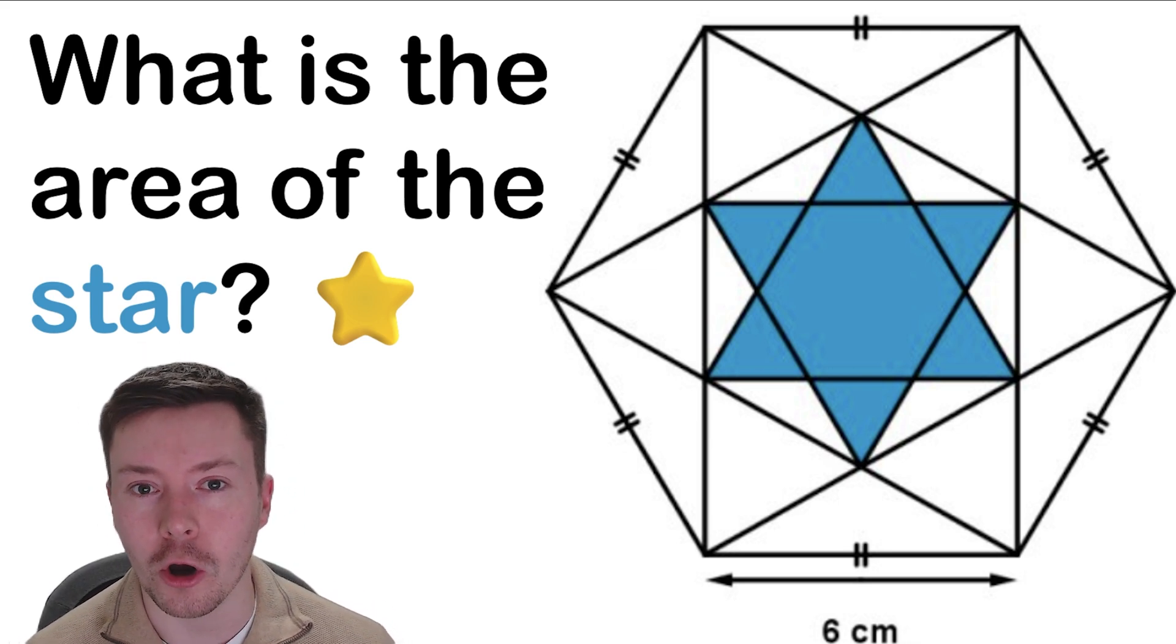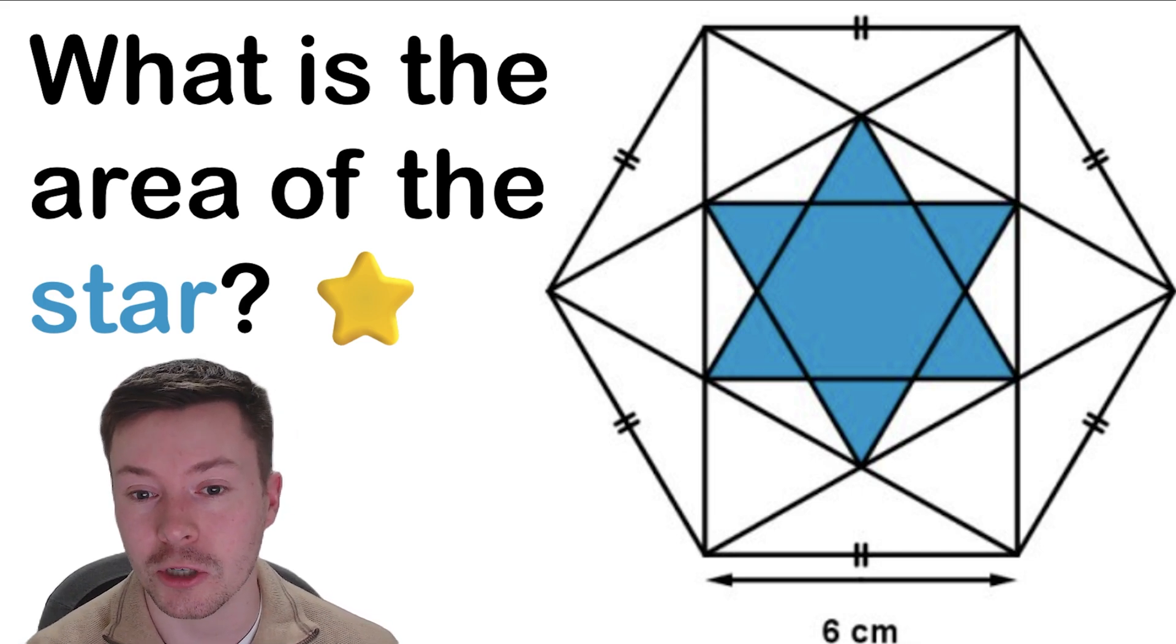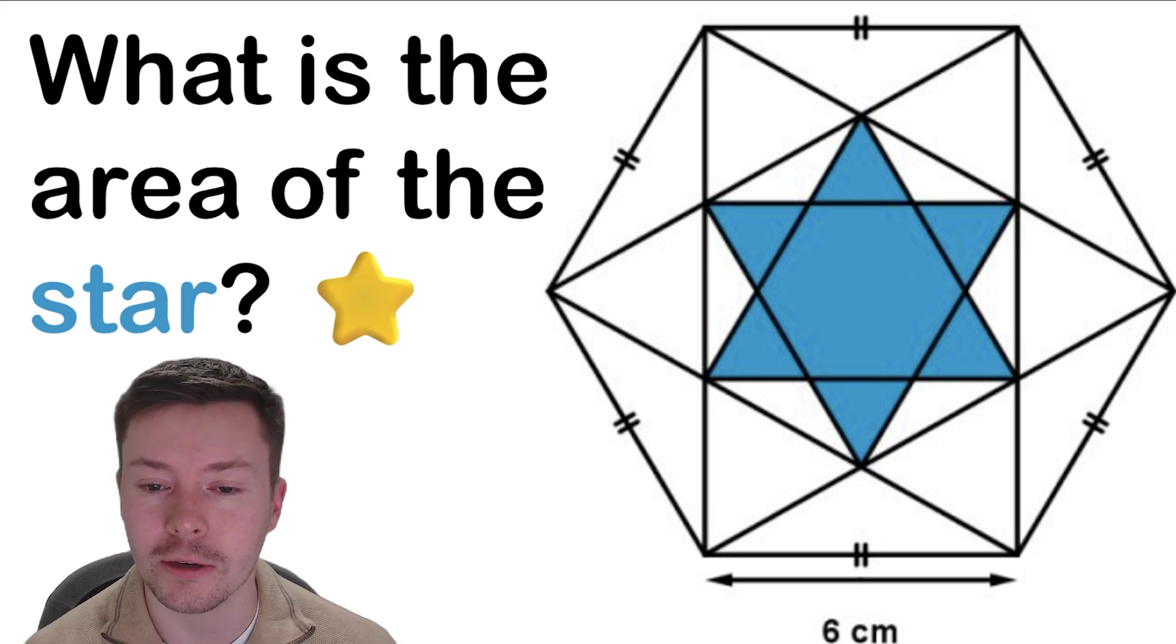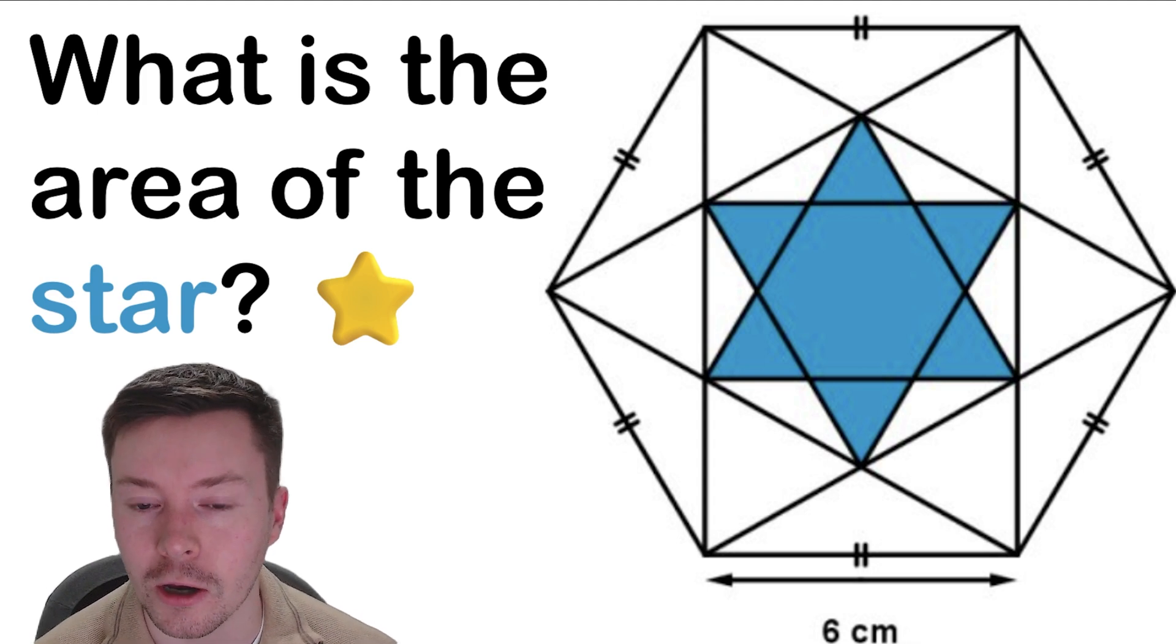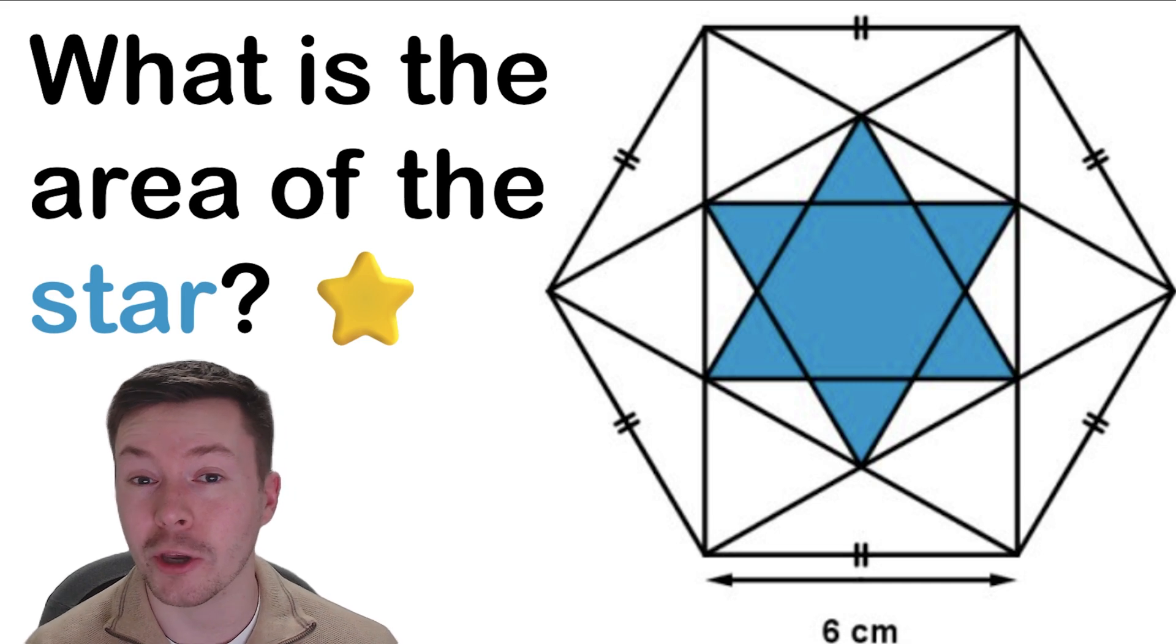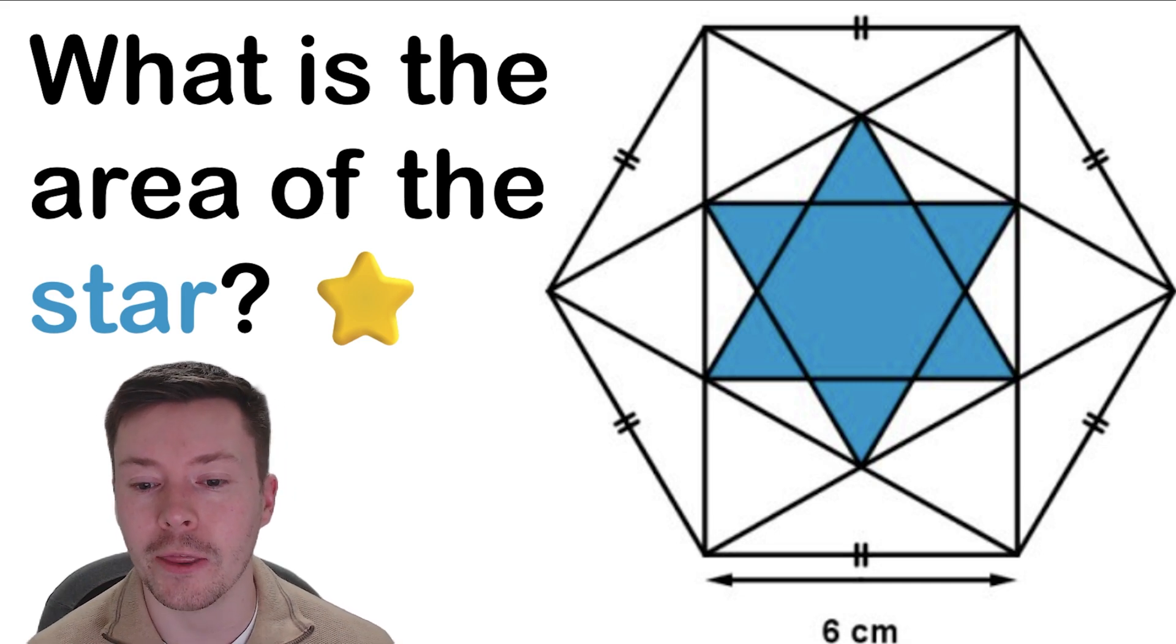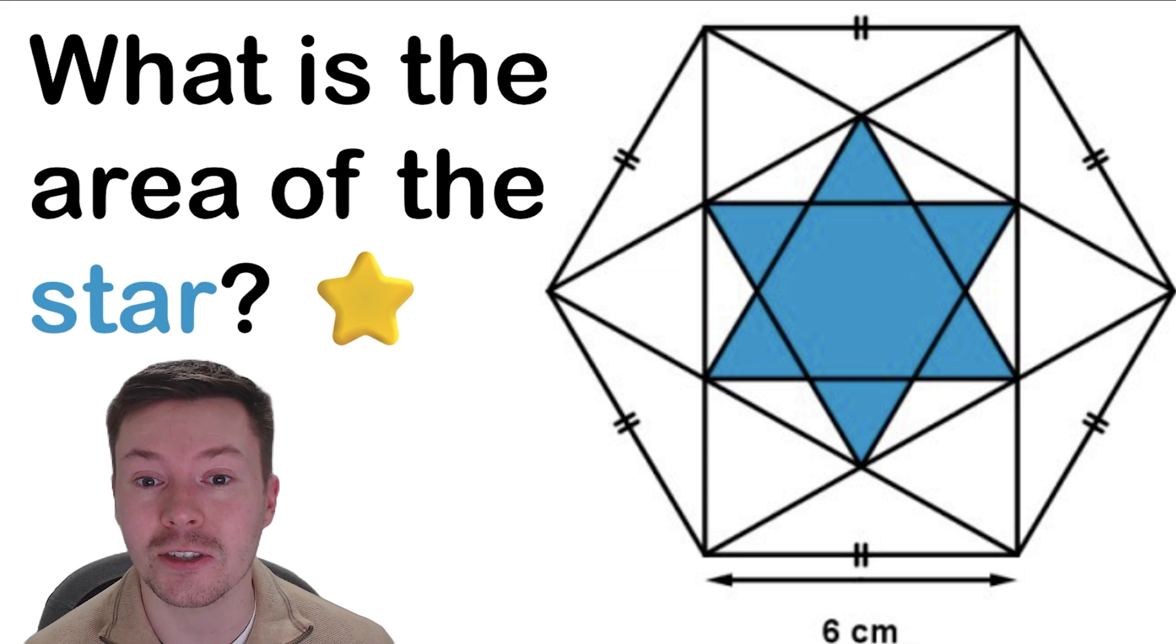So we've got this star which is created inside of a hexagon, and then we've got some lines that construct another regular hexagon inside. So there's an inner hexagon and then inside that is the star. Now this is a regular shape with chords going across the hexagon. Bear that in mind, and the side length of the largest hexagon is 6.